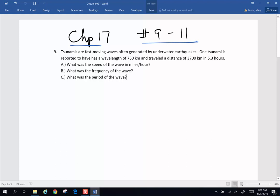Tsunamis are fast-moving waves, often generated by underwater earthquakes. One tsunami is reported to have a wavelength of 750 kilometers and have traveled a distance of 3,700 kilometers in 5.3 hours. What was the speed of the wave in miles per hour? So part A.